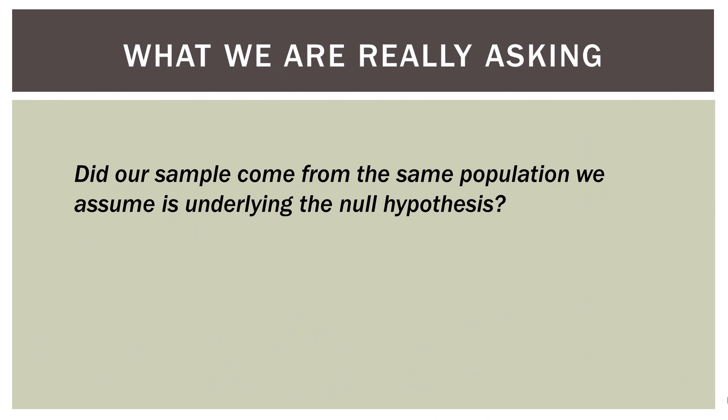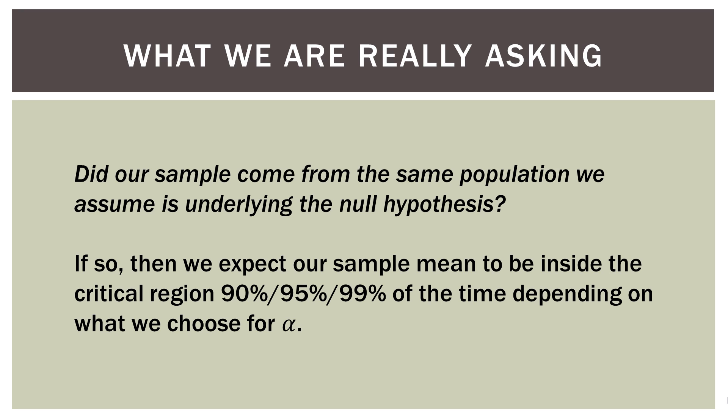So what are we really asking in sort of real-world language? What we're asking is, did our sample come from the same population we assume is underlying the null hypothesis? So if we take a sample from a population to use in our Z statistic, we want to make sure, or we're testing, whether or not our sample came from the population we are hypothesizing it came from. Now if so, then we expect our sample mean to be inside the critical region, either 90% of the time, 95% of the time, or 99% of the time, depending on what we choose for alpha. That's what we're really asking: is our sample mean from the same population we are hypothesizing it to be coming from?